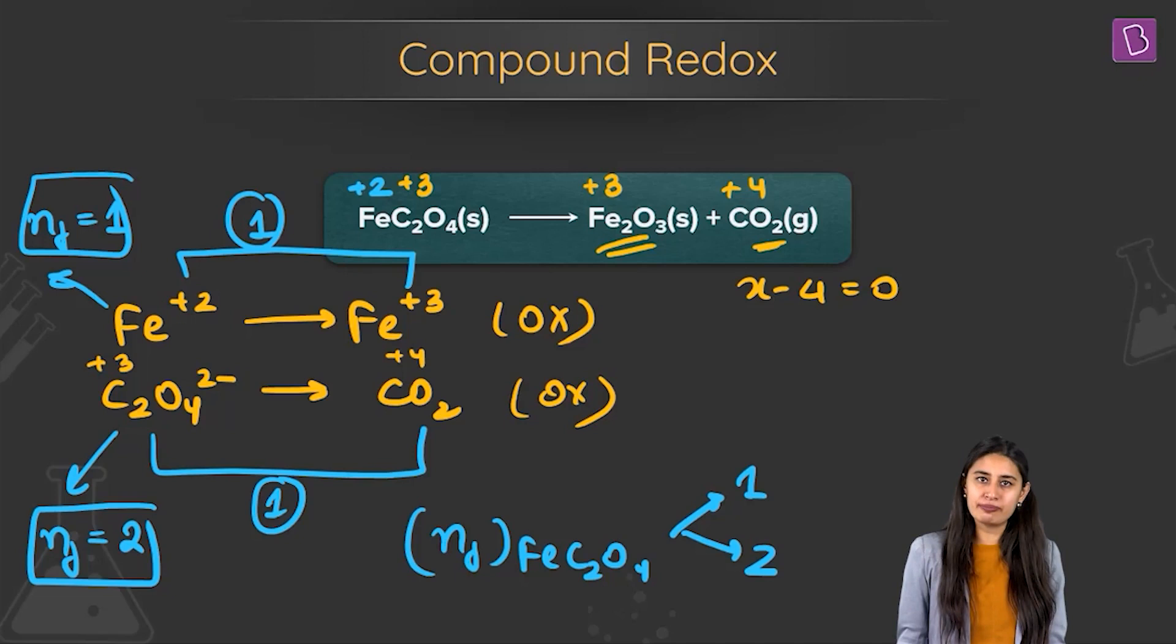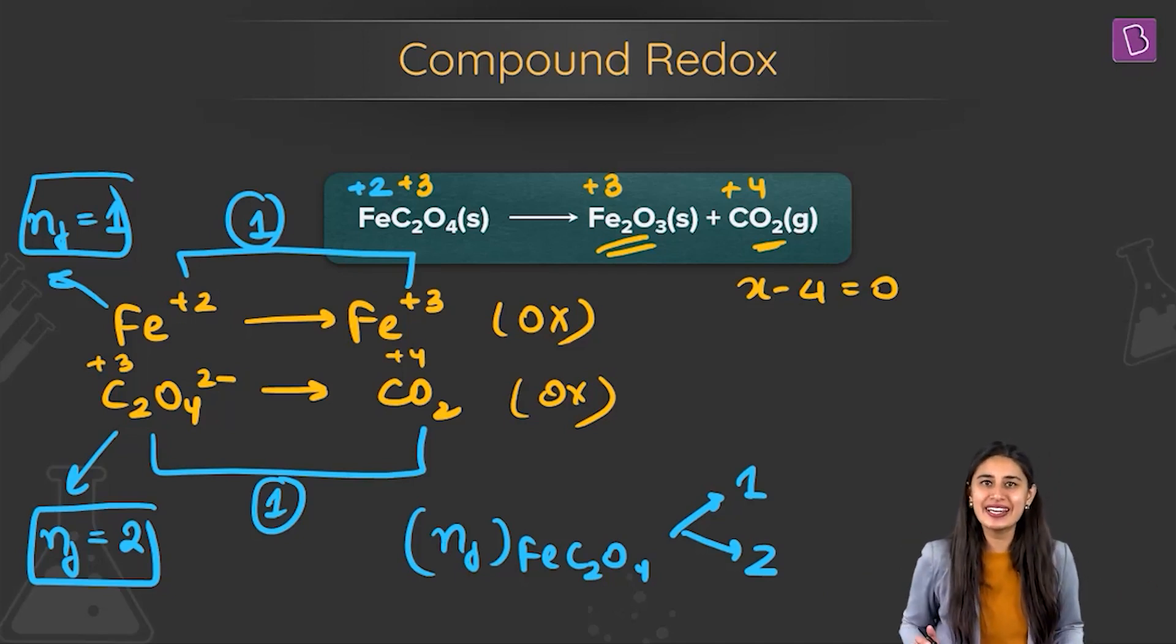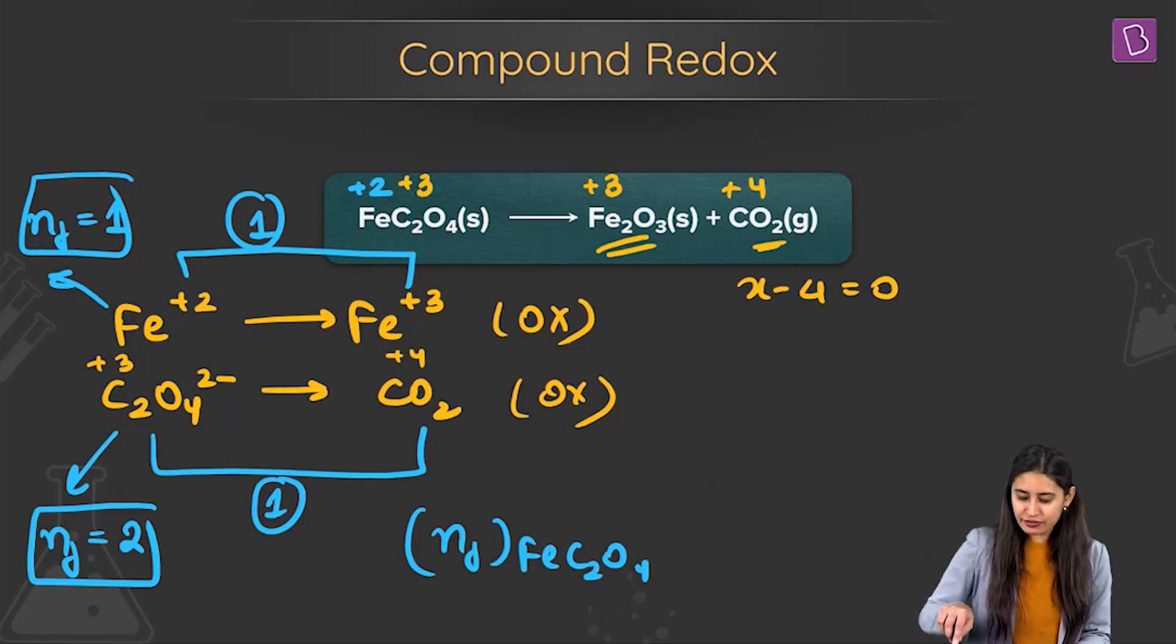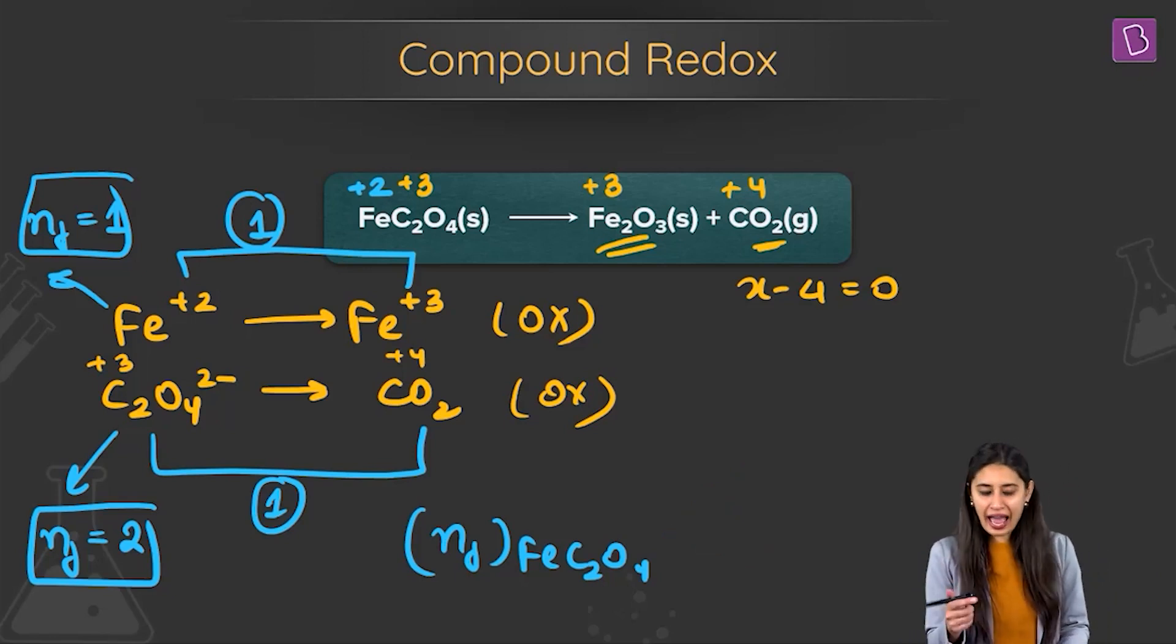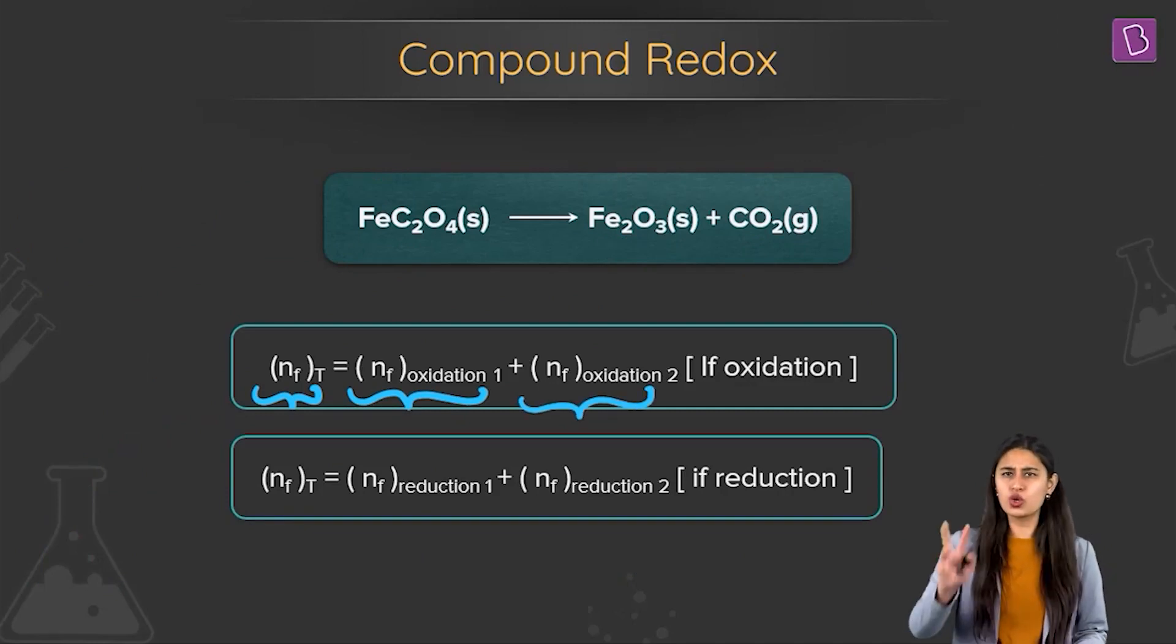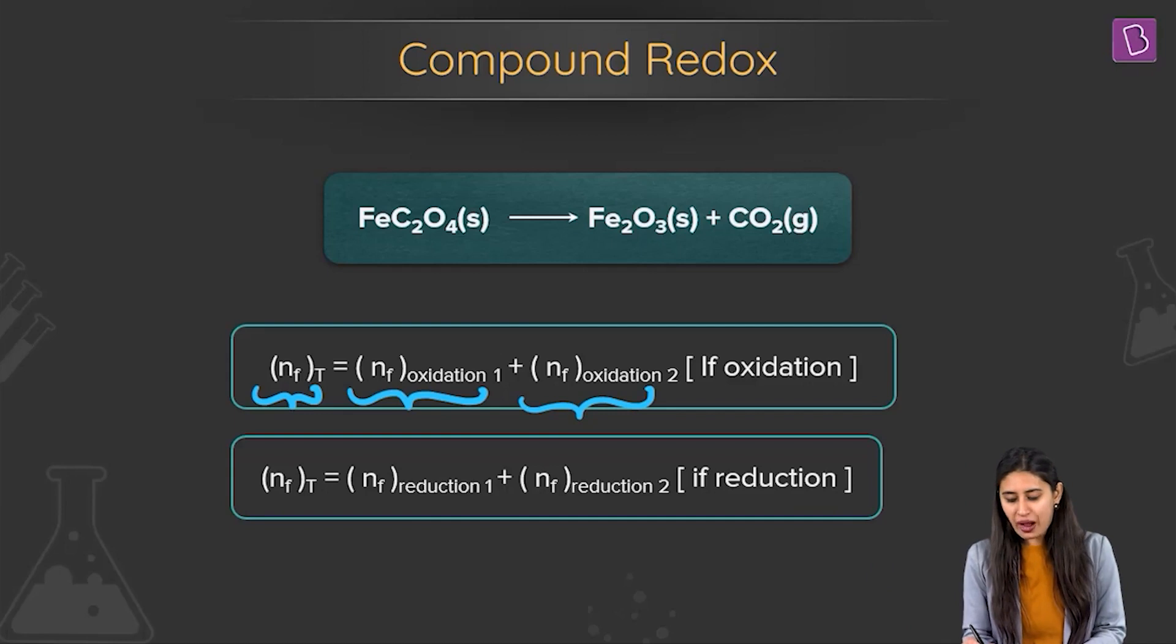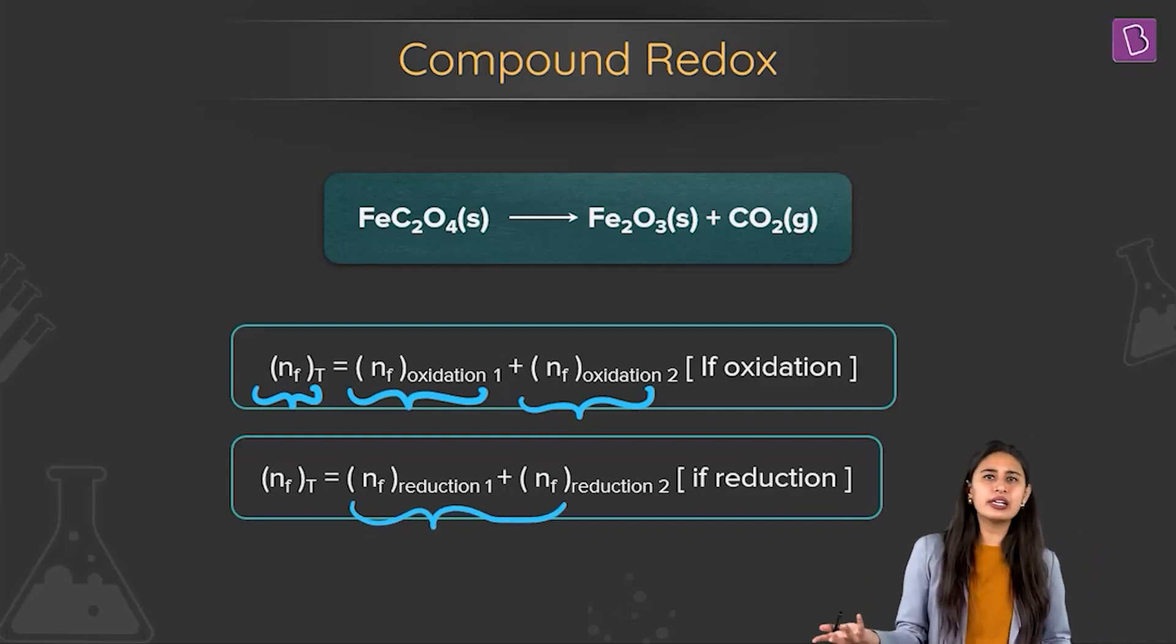To find out the n-factor of the compound, you have to add the n-factors, okay? Because both are involved in changing the oxidation state. So what do we do? For these kind of cases, you simply add the n-factors like this. So n-factor total is n-factor oxidation 1 plus n-factor oxidation 2 if two products are formed which are both oxidized. But if both are reduced, then you add the n-factors similarly and find out the n-factor of the compound overall.